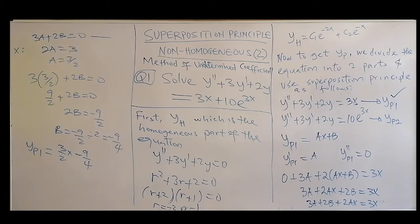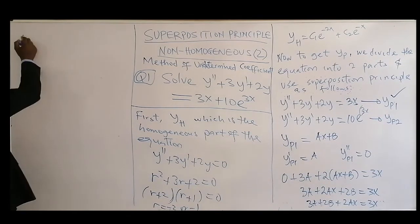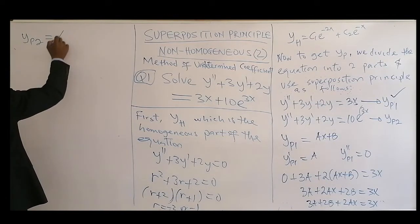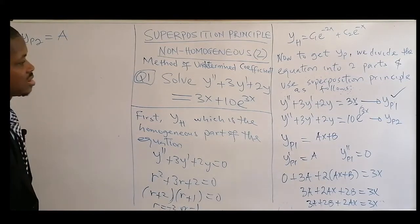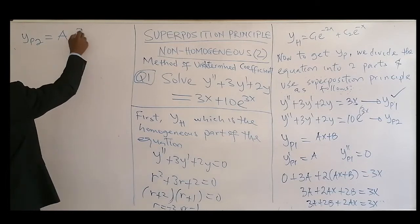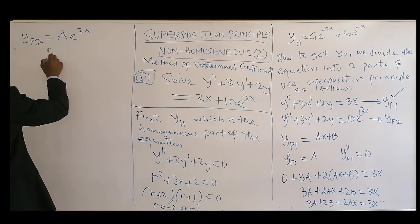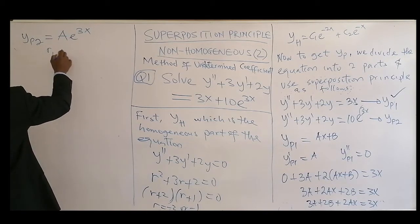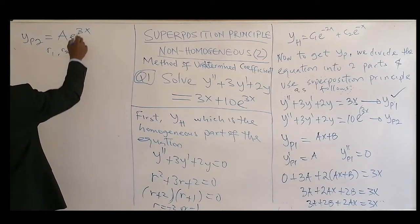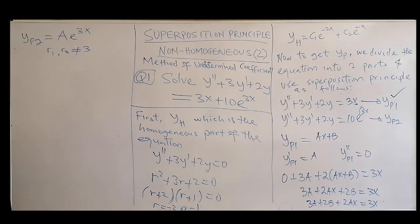For the YP2, look at what we have for the right-hand side, the non-homogeneous part there. We are very lucky, none of the r1 and r2 is equal to 3 here. Your r1 and r2 are not equal to this, so to make our work easier, then we can have YP2 equal to Ae^(3x). r1 and r2 are not equal to 3.